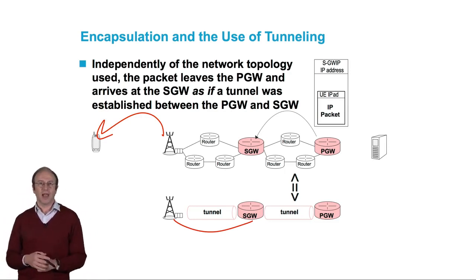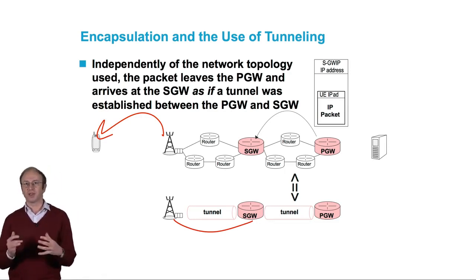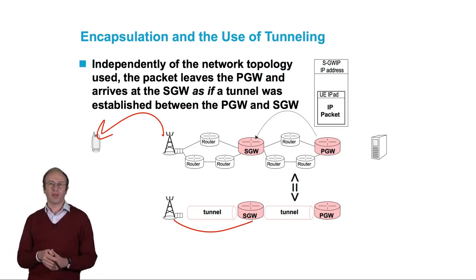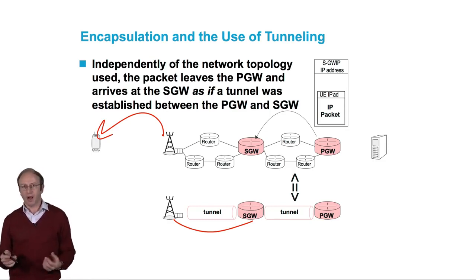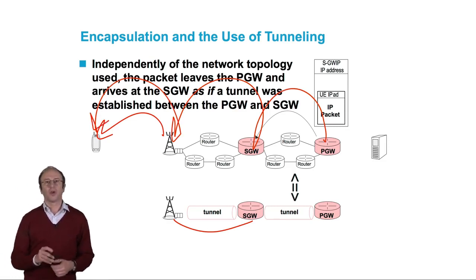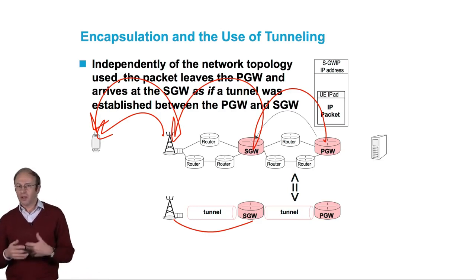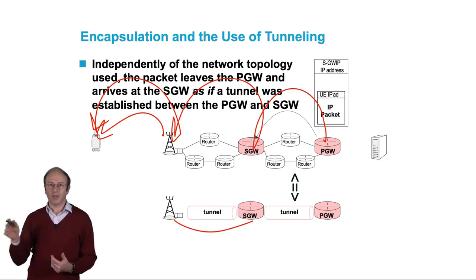In a few words, to make it clear, IP packets that should be transmitted to a mobile terminal are systematically routed to the P gateway. They are then put in other IP packets within the 4G core network. This operation is called encapsulation. These packets are transmitted hop by hop to the terminal as if they were in a tunnel, from the P gateway to the S gateway and from the S gateway to the eNodeB where the mobile is.